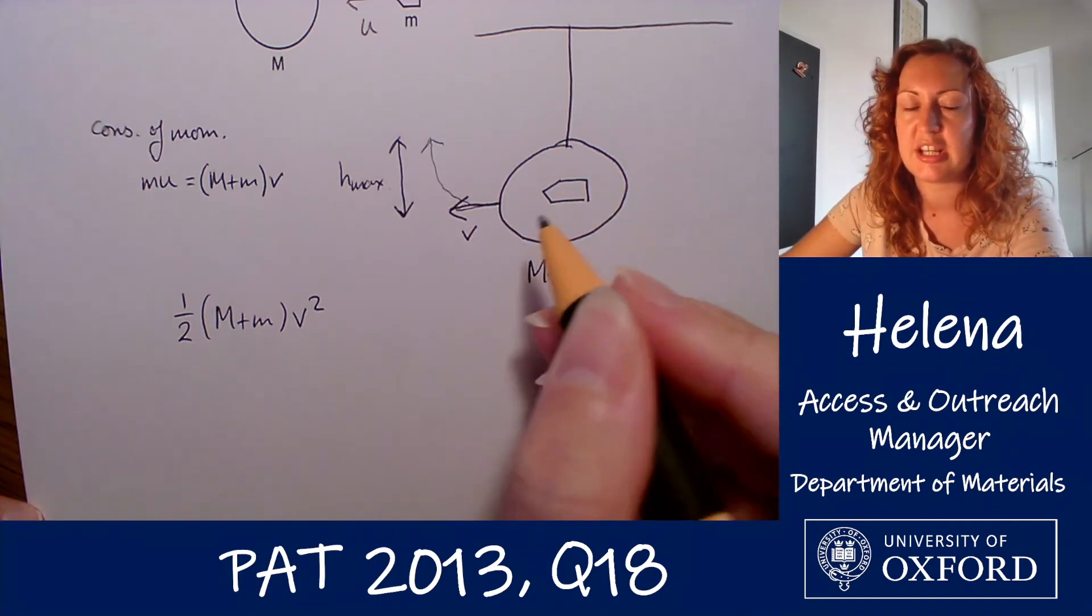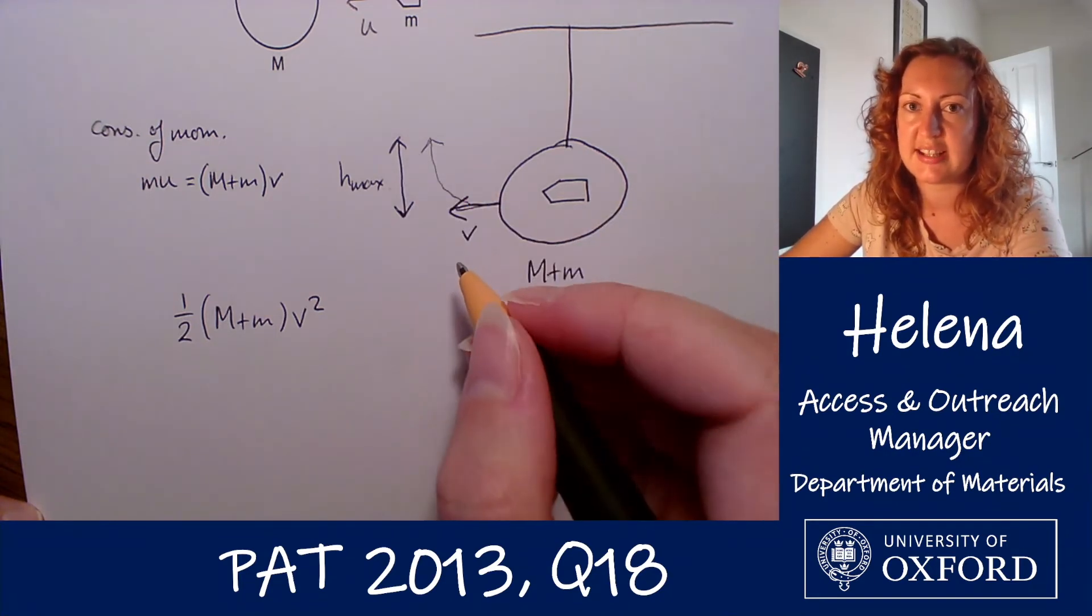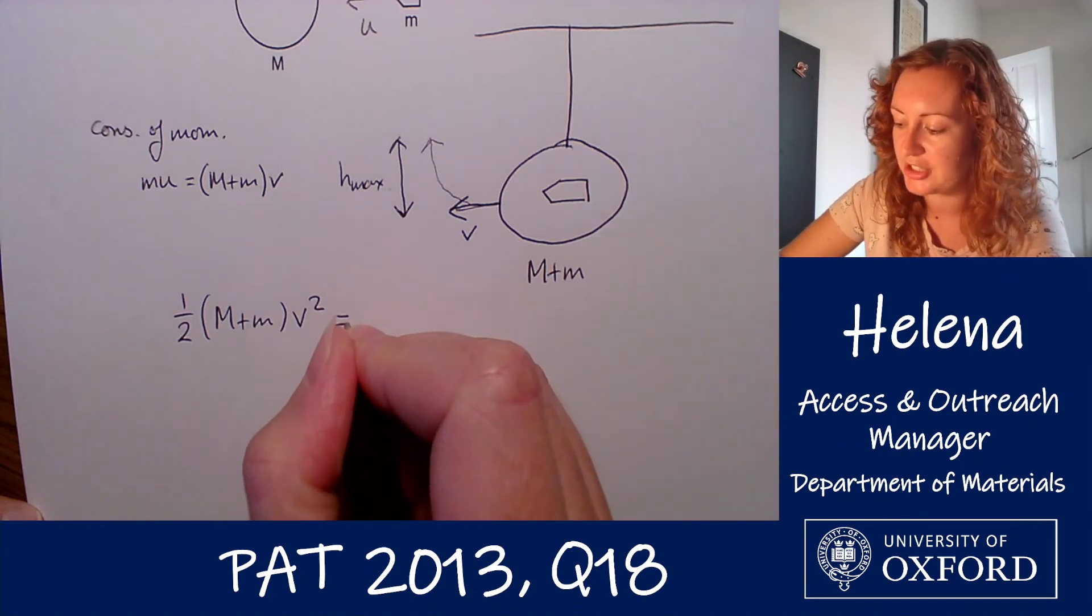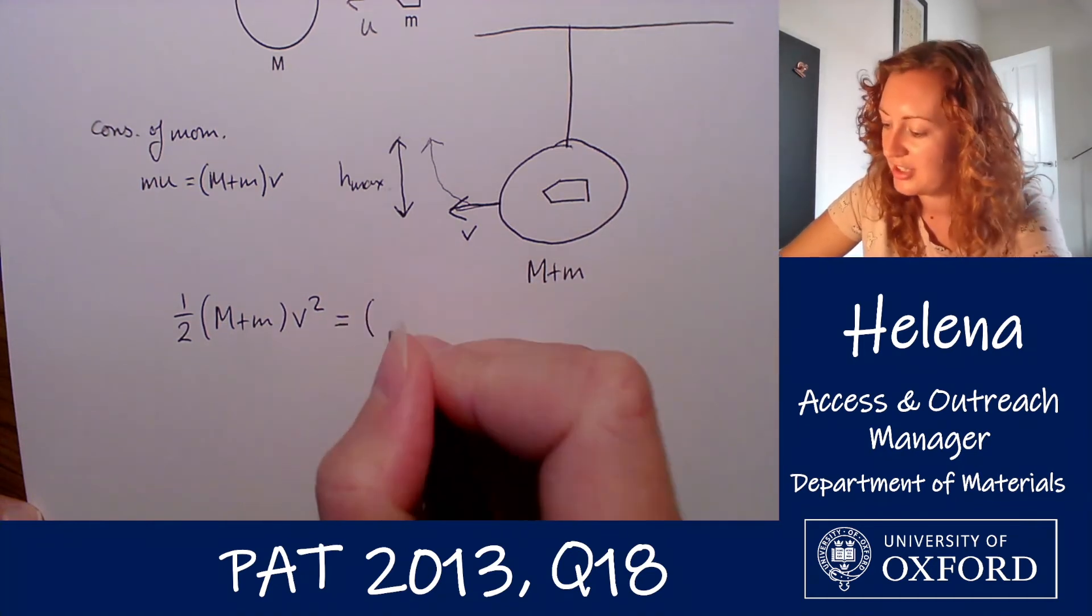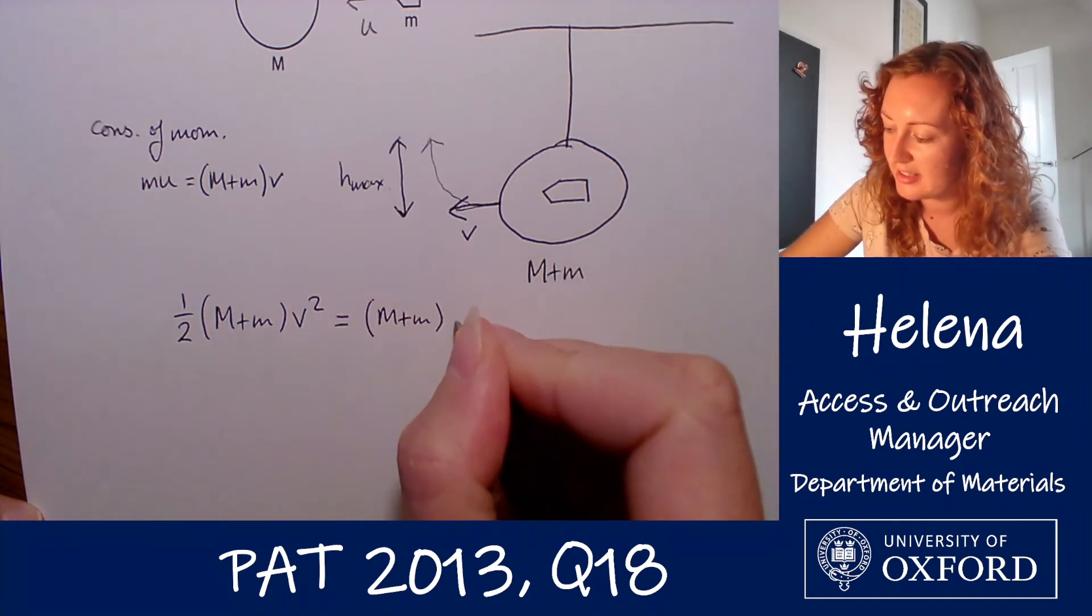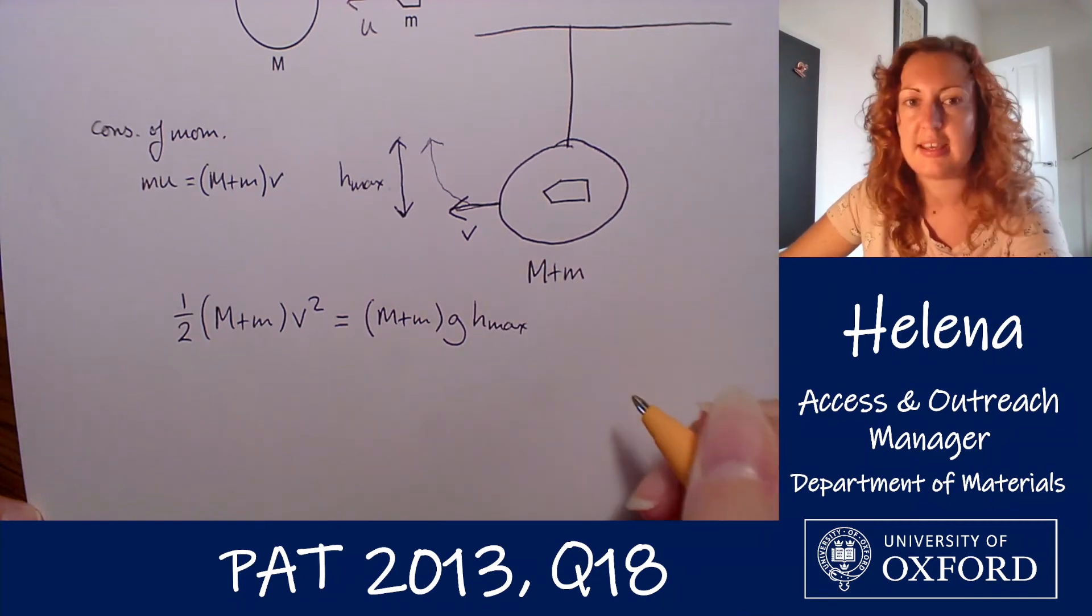And like I say, at the maximum height where its velocity is zero, all of that energy has gone into increasing that height, so gone into the gravitational potential energy which is mgh. So we have the sum of the masses times g times h_max here.